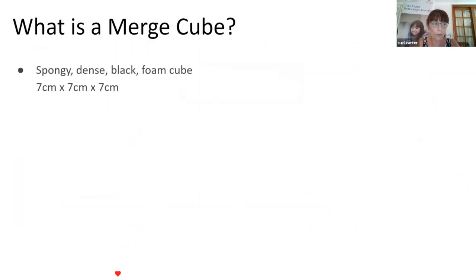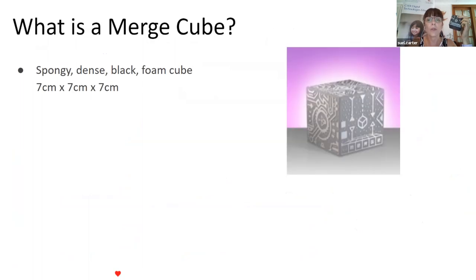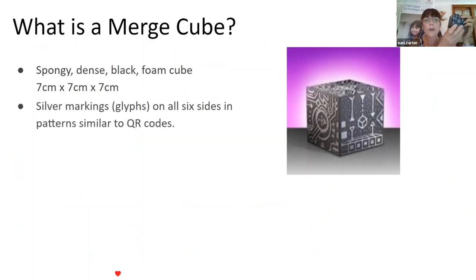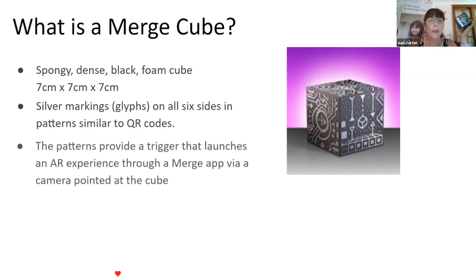Let's take a look at the Merge Cube — I have one in my hand here today. Basically, a Merge Cube is a dense foam cube — a spongy one. I measured mine to discover it was seven by seven by seven centimetres, so there's some mathematics you might be able to do with your students. If you look around the Merge Cube, there are silver markings often referred to as glyphs, like hieroglyphs, on all six sides. The patterns are similar to QR codes, but each side of the Merge Cube has a different pattern. These patterns are the triggers that launch the augmented reality experience.